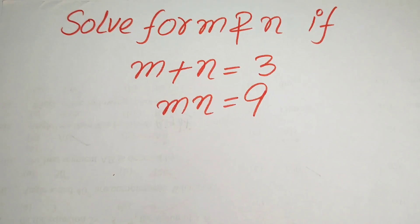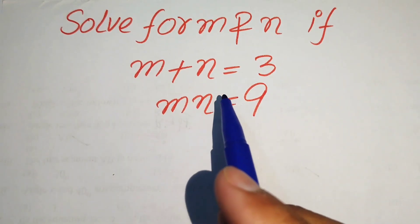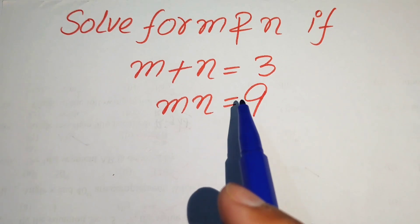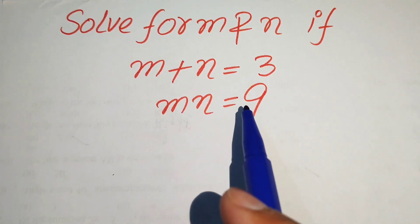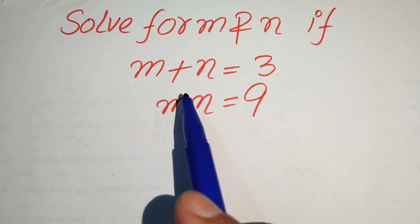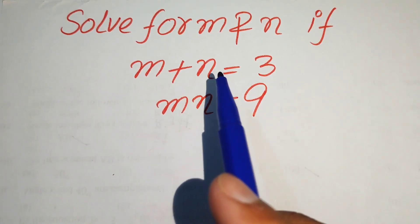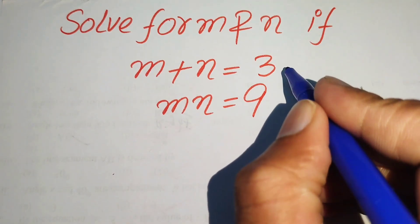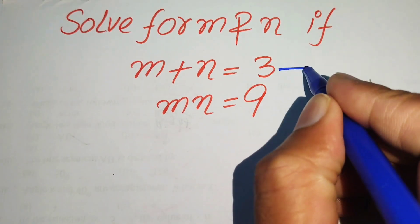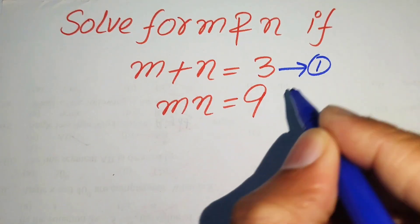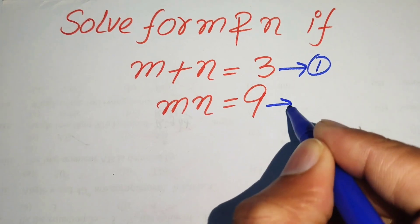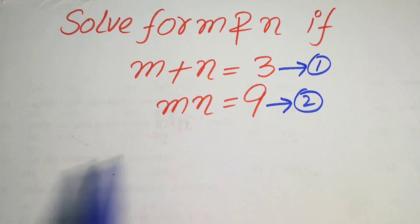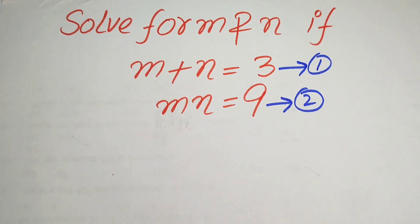Hello everyone, welcome. We will solve this math olympiad algebra problem. We have m plus n equals 3 — equation number one — and m times n equals 9 — equation number two. We will solve for the values of m and n.